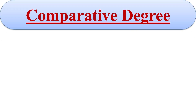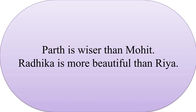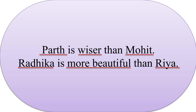Next is Comparative degree. When we compare two things, persons or places, the adjective is in Comparative degree. For example: 'Parth is wiser than Mohit' and 'Radhika is more beautiful than Riya.' In the first sentence, 'wiser' is used to compare Mohit and Parth. In the second sentence, Radhika and Riya are compared by the word 'more beautiful'. So, they are in Comparative degree.